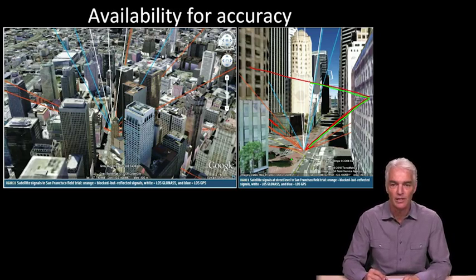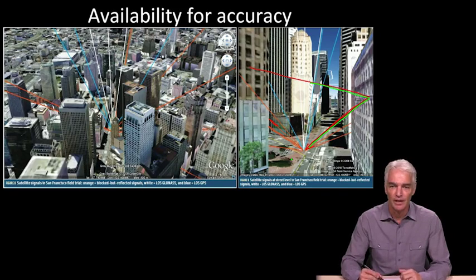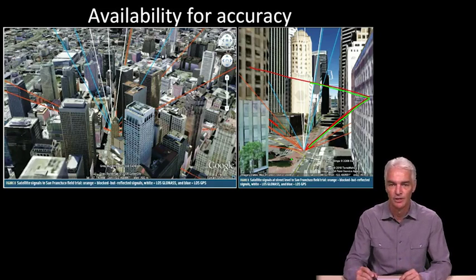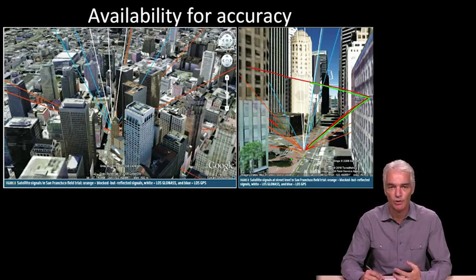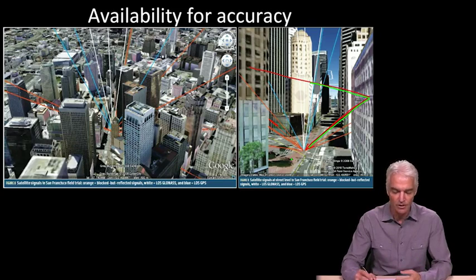So although accuracy of GPS and all the other GNSs is down at the meter level if you're out in the open, when you're in a city, no matter how good the signals from the satellites are, when you pick up a reflected signal you're subject to some tremendous inaccuracies. And the way you get rid of that is by tracking as many satellites as possible with direct line of sight. That's why you need so many satellites, because you can only see two or three of any particular constellation when you're in these streets.